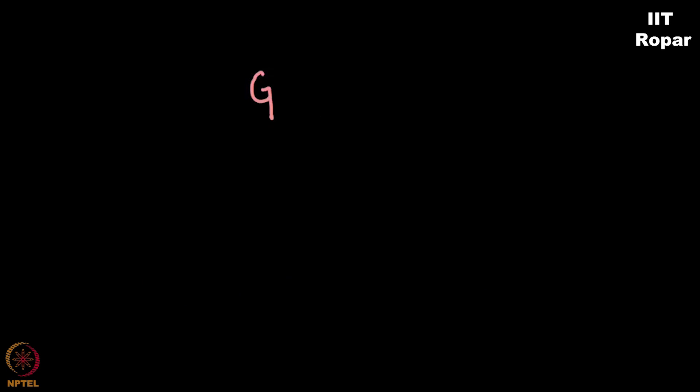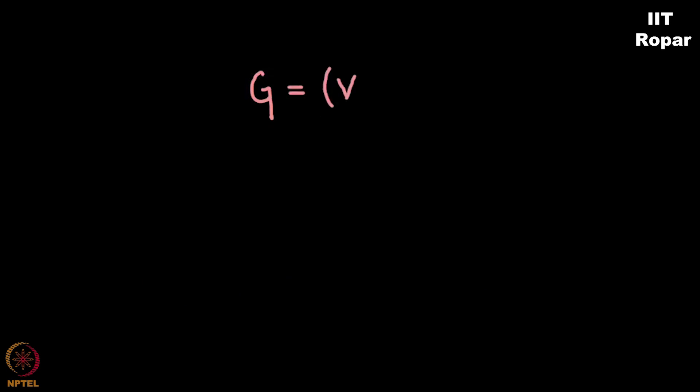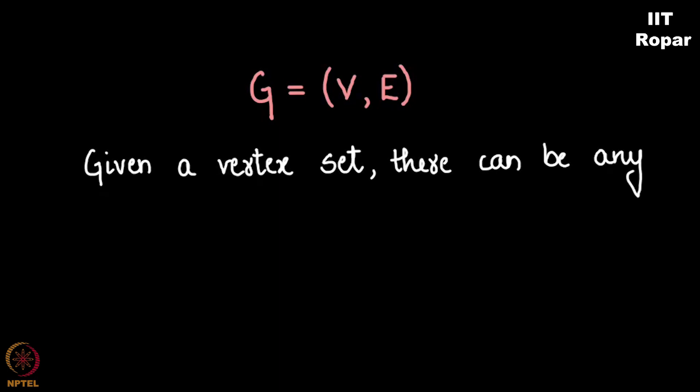By a graph G we mean the vertex set and the edge set. Given the vertex set there can be any number of possible edge sets that you can think of, although finitely many it will actually be many possibilities.